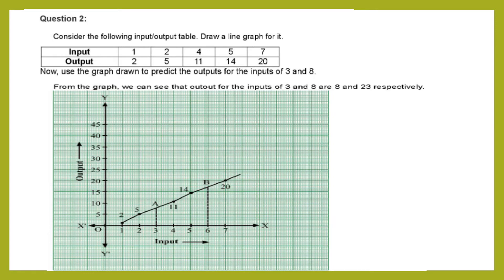Consider the following input-output table and draw a line graph for it. The input is taken along the x-axis and output along the y-axis. Each division along the x-axis is 1 unit and along the y-axis it is 5 units. For input 1, the output is 2.